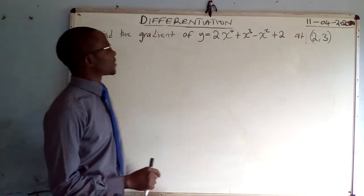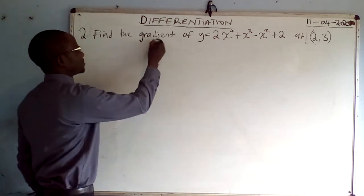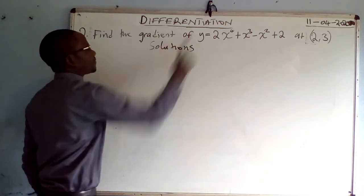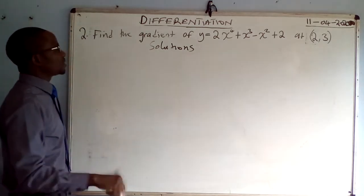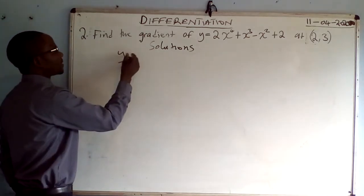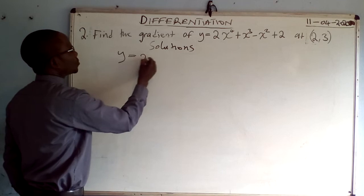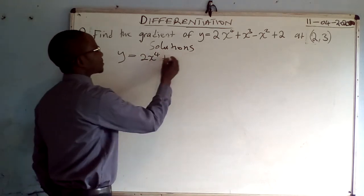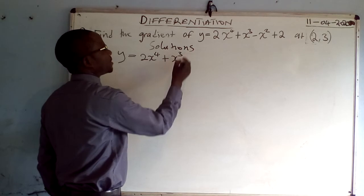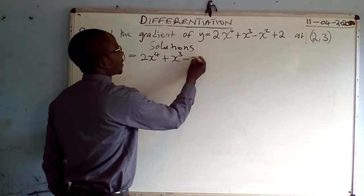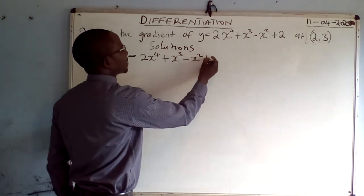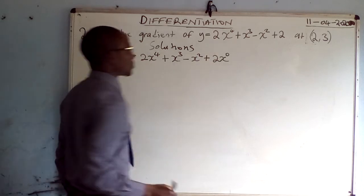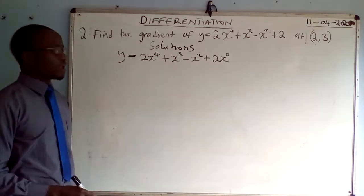If we rewrite the function, it becomes y = 2x to the power 4, plus x to the power 3, minus x to the power 2, plus 2x to the power 0.